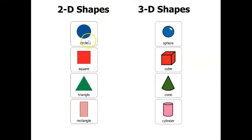This 2D shape is a circle. It is round and does not have any sides. This 2D shape is a square. It has four sides that are the same. This is a triangle. It's a 2D shape that has three sides.